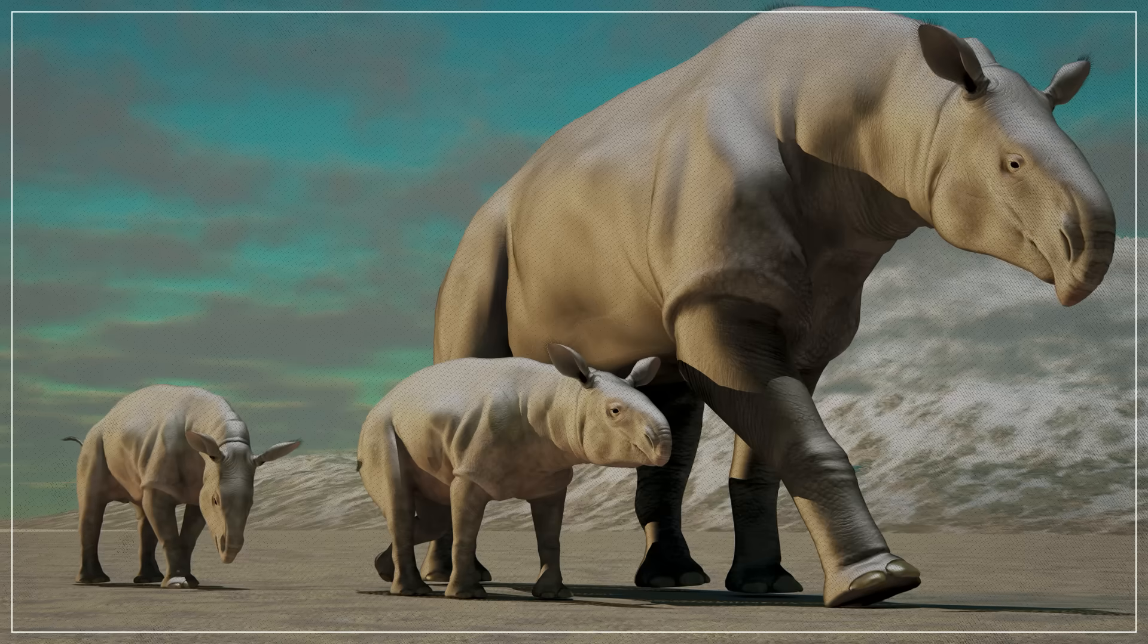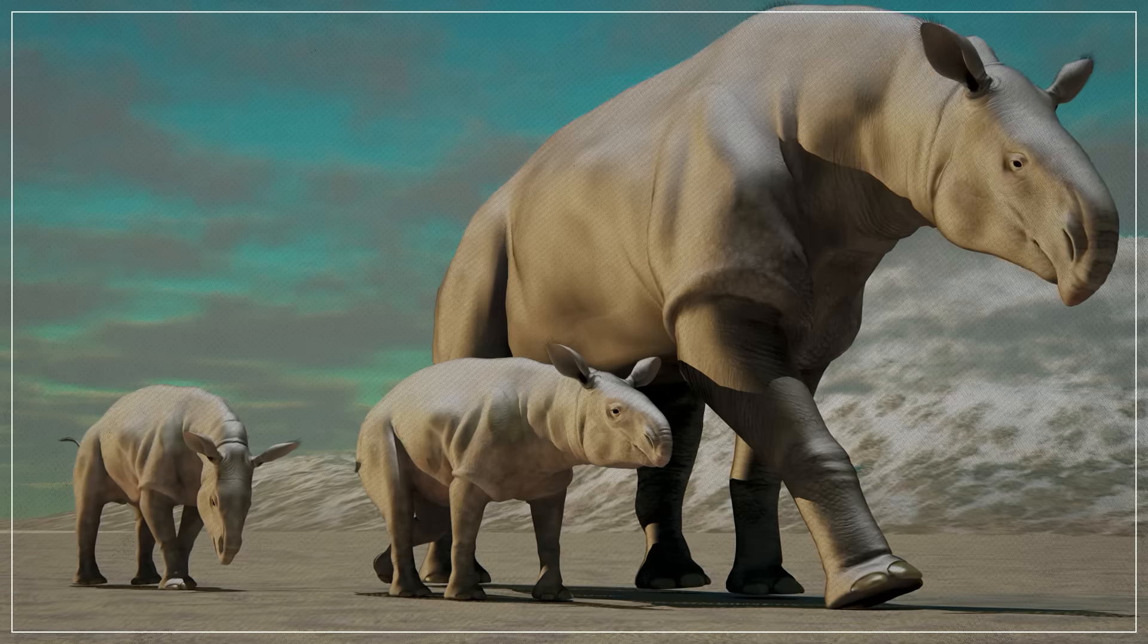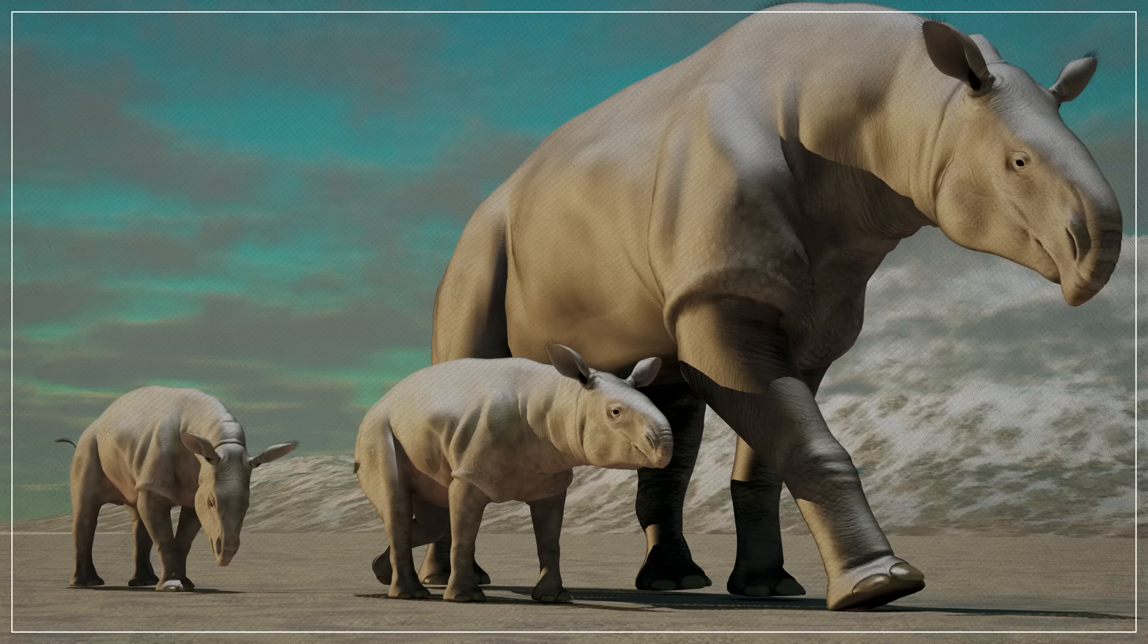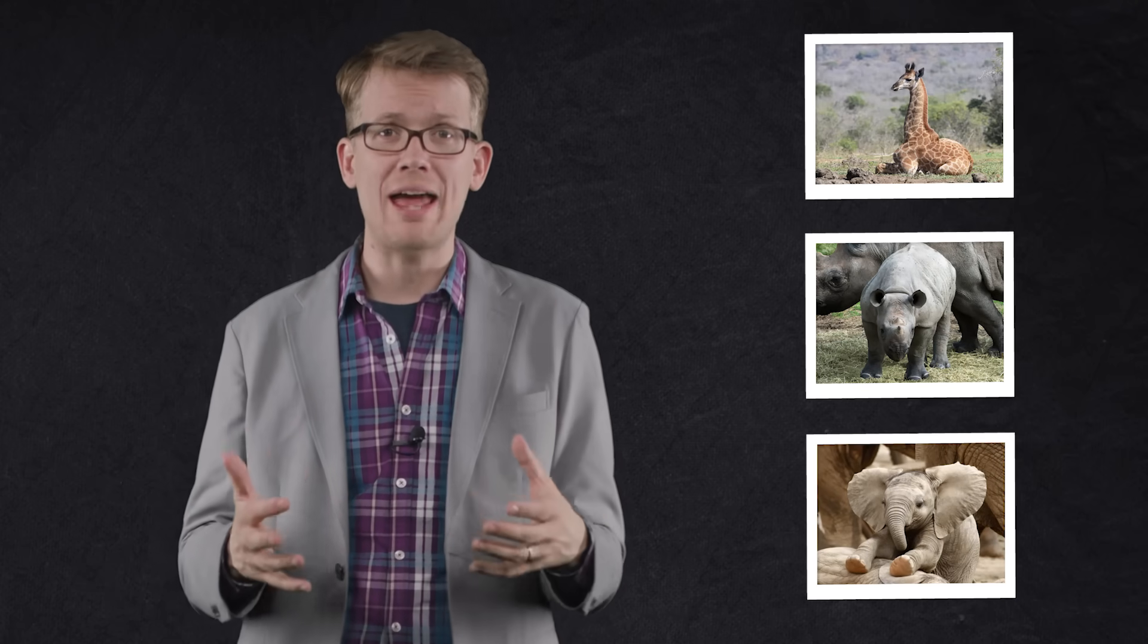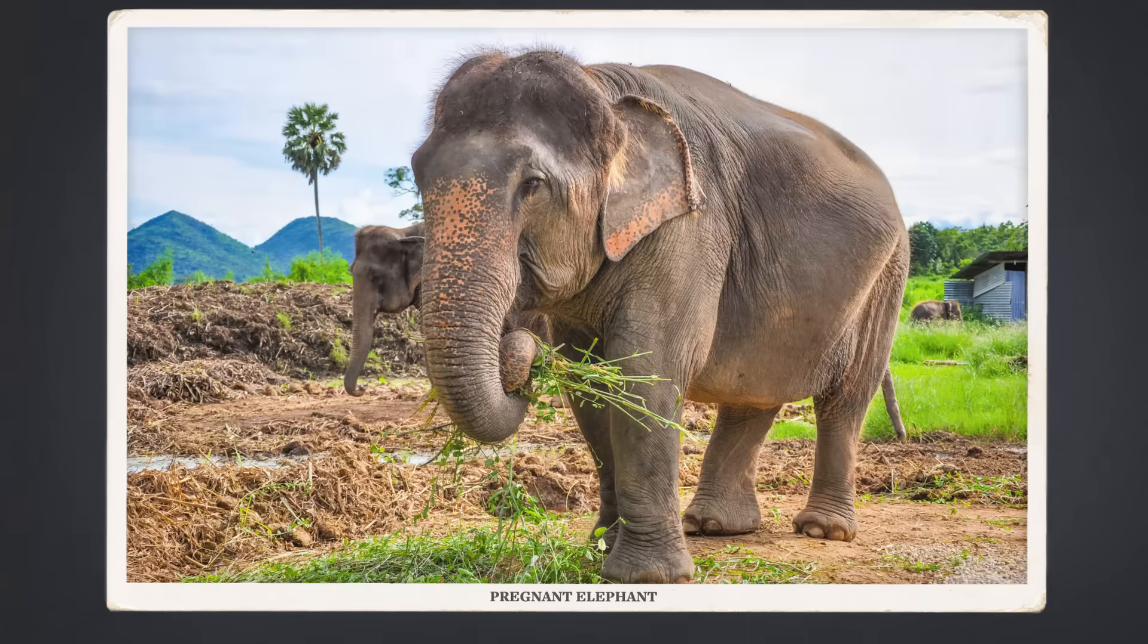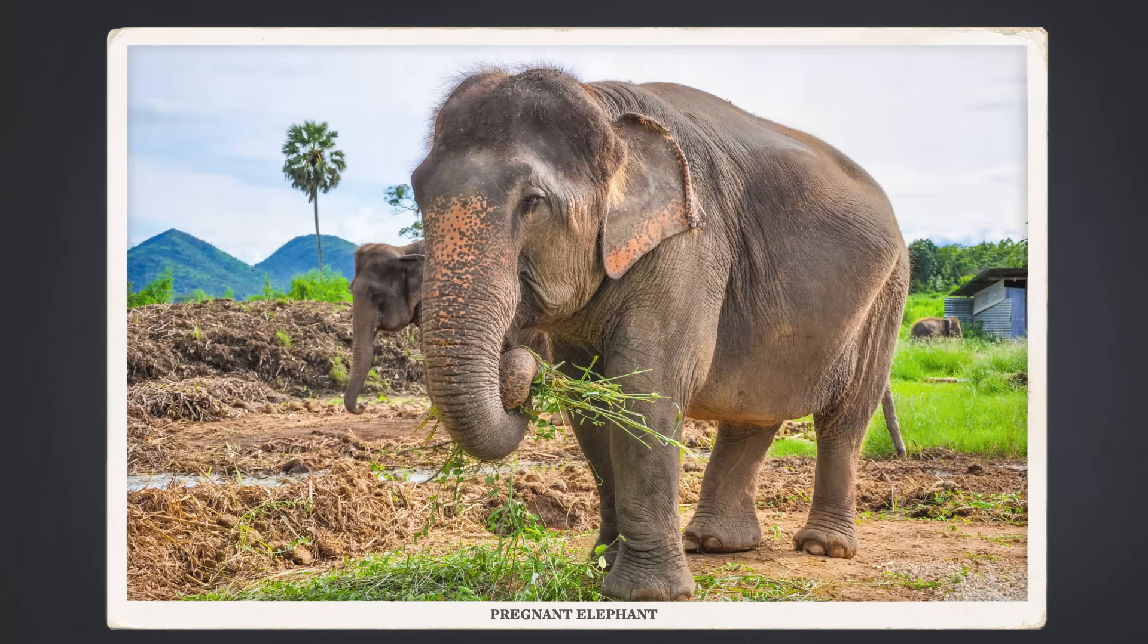Part of it might have to do with how they reproduced. Paraceratherium was a placental mammal, like us, meaning that it gestated its young inside its body. And if this ancient rhino was anything like large mammals we have alive today, that would have taken a very long time. Big mammals like giraffes, rhinos, and elephants usually only have one offspring at a time, and gestation can last longer than some other kinds of animals live. Elephants, for example, carry their babies for more than two years.